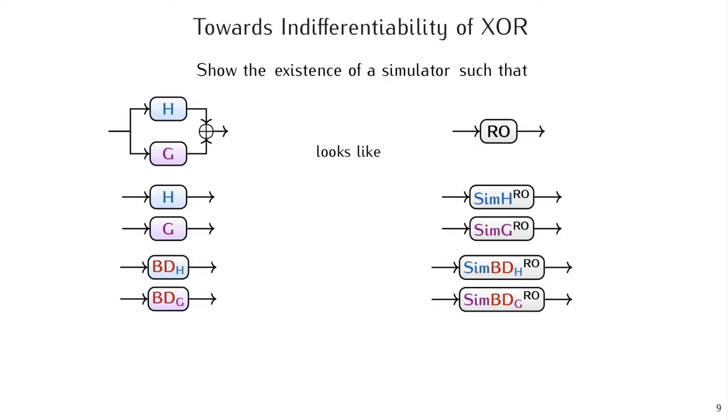The goal for us was then to show the existence of a simulator such that the adversary's interaction with the interfaces on the left-hand side looked like an interaction with the interfaces on the right-hand side. Achieving this goal, however, is very challenging, and we could only prove this with some restriction on the adaptivity of the queries that the adversaries allowed to make.